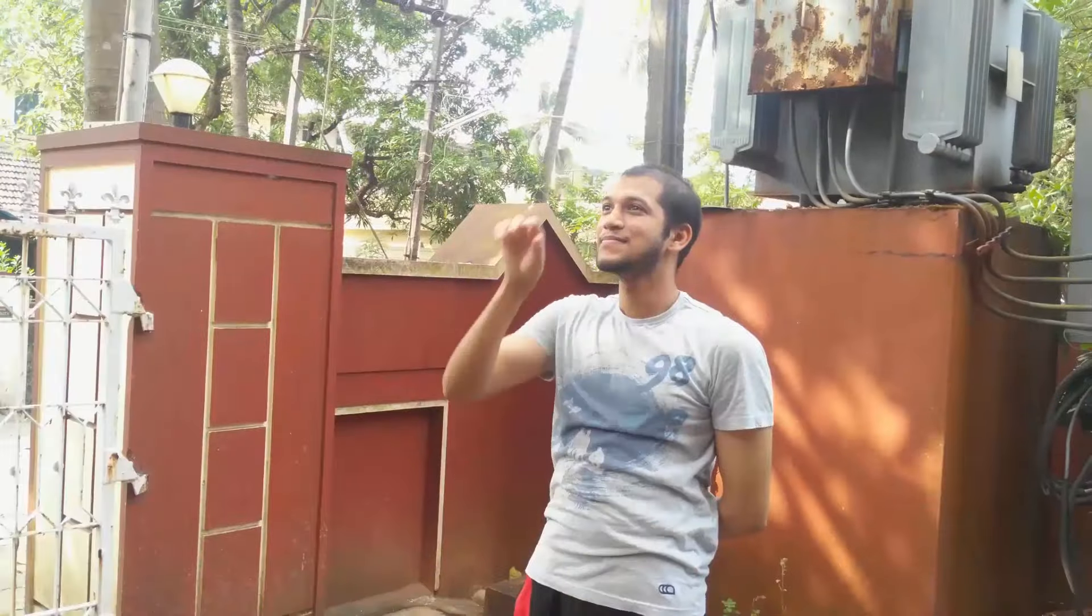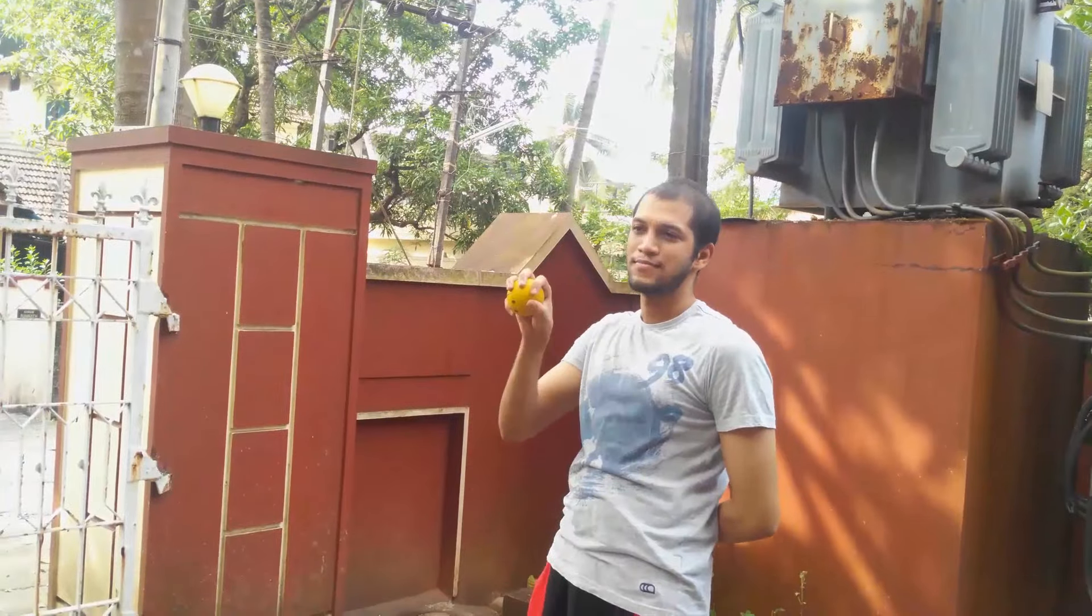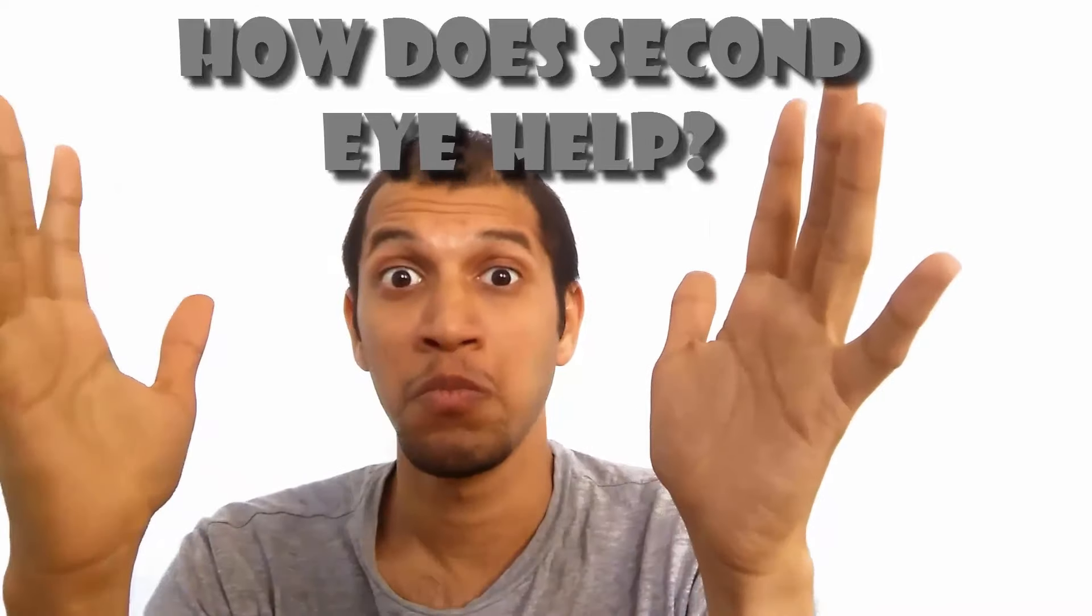But with both eyes open, it's a cinch. So how does the second eye make the world look so much better, so much three-dimensional?